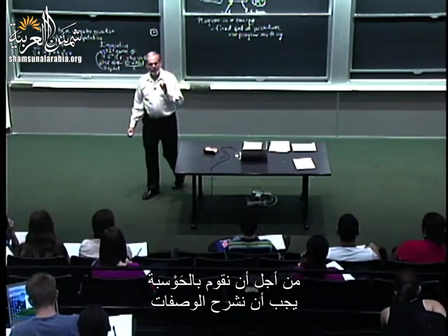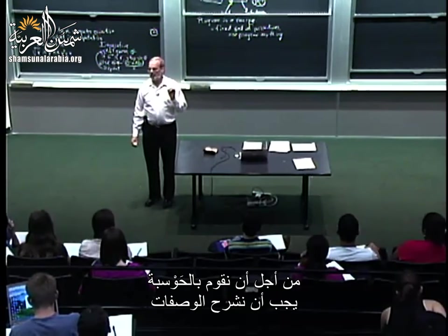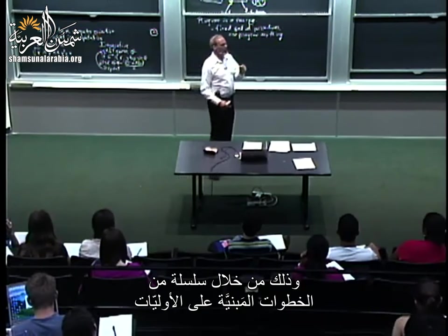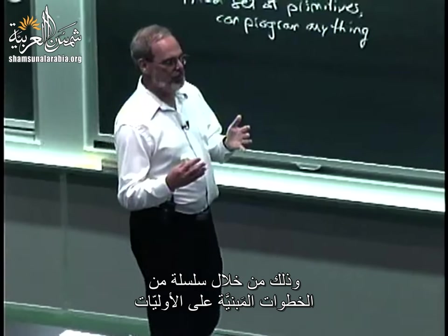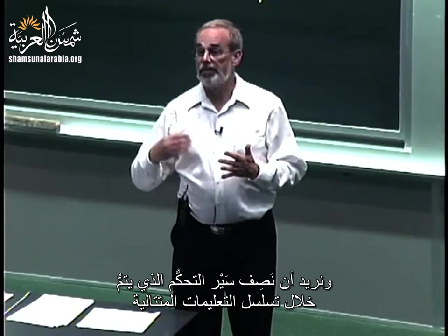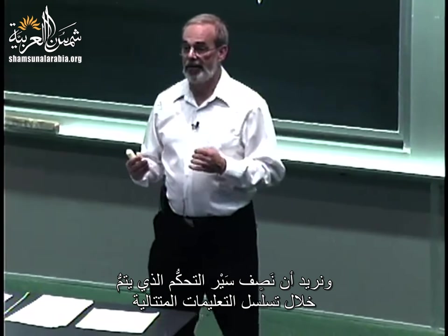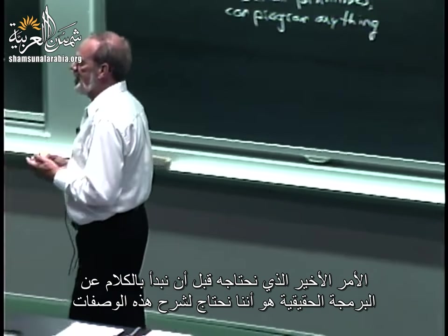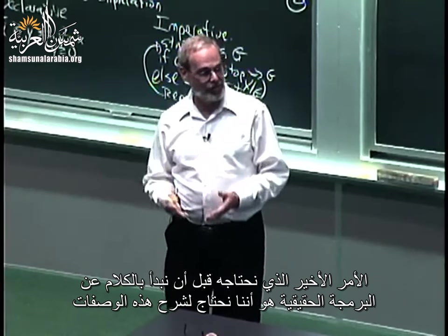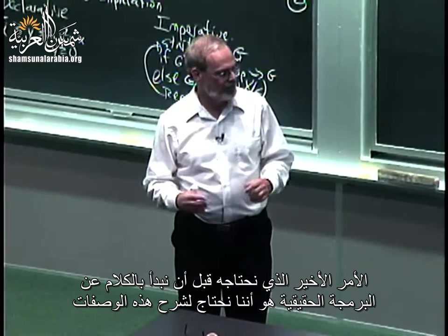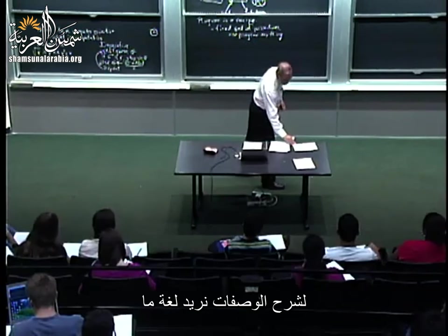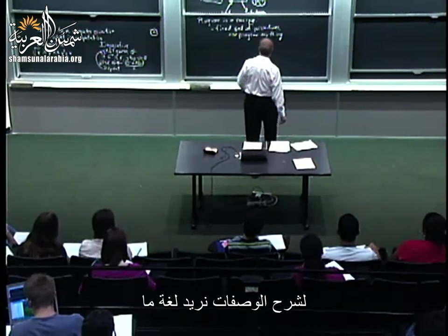So where are we? In order to do computation, we want to describe recipes — sequences of steps built on some primitives — and we want to describe the flow of control that goes through those steps. The last thing we need before we can start talking about real programming is a language to describe those recipes.